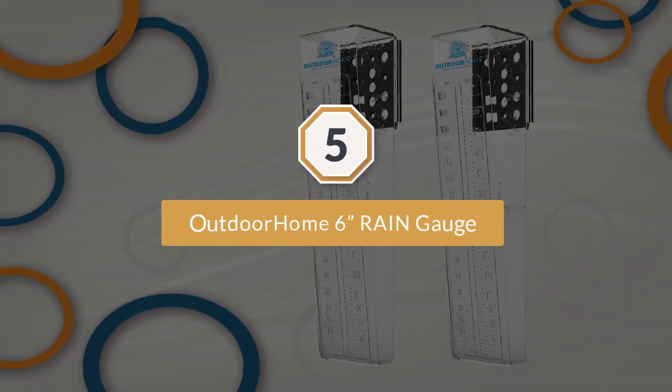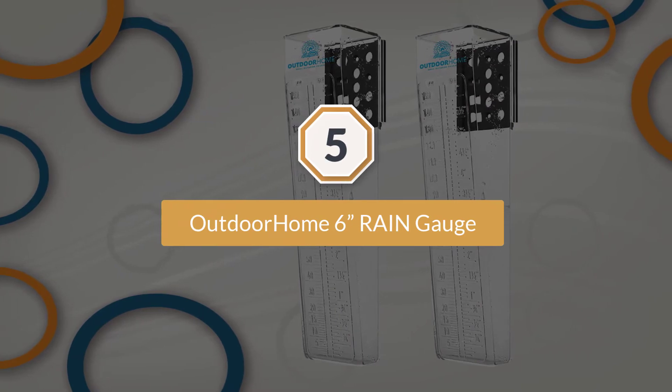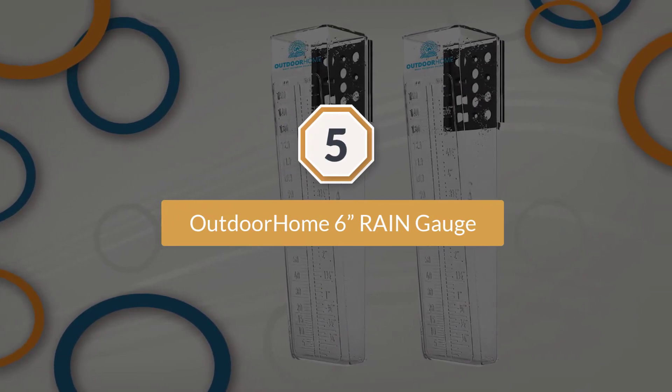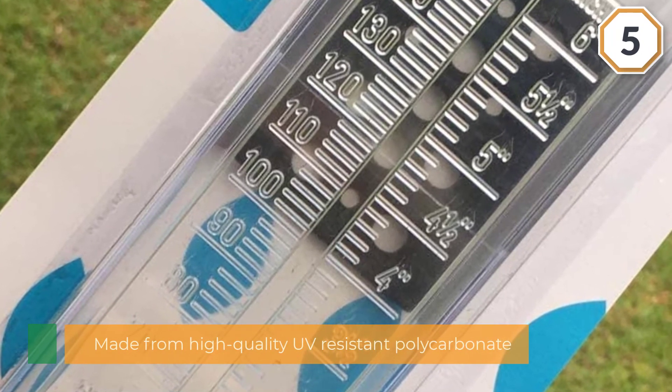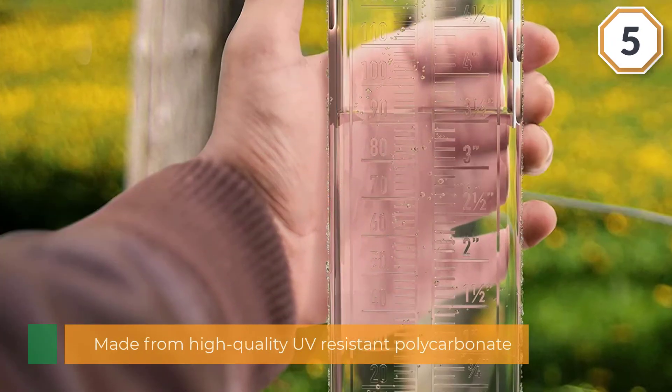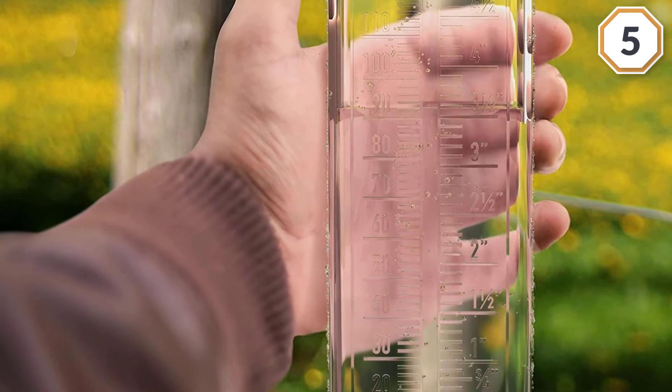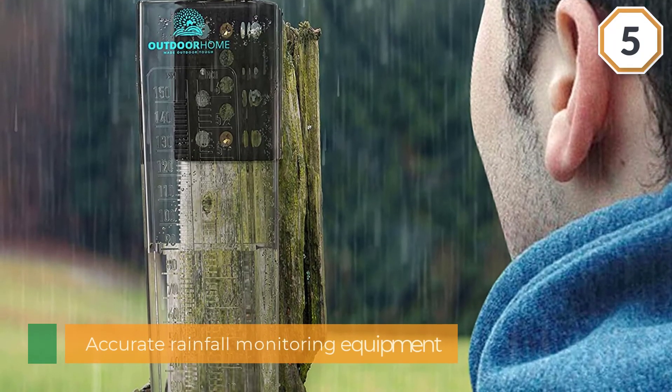Number five: Outdoor Home 6-inch Rain Gauge. Outdoor Home has designed just the right equipment made from high-quality UV-resistant polycarbonate heavy-duty plastic material. It is a high-performing, reliable, and accurate rainfall monitoring equipment that has clear markings and figures imprinted to last a long time.